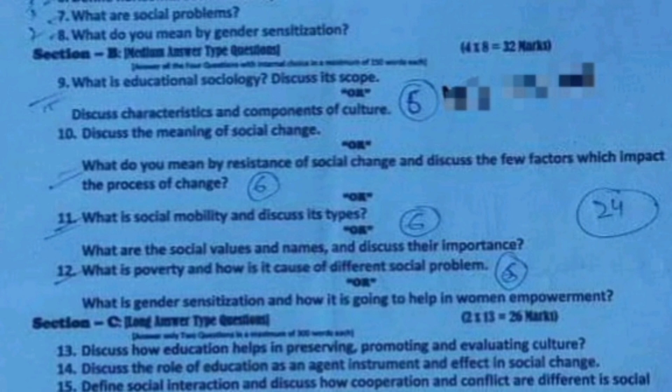Question number 10: discuss the meaning of social change, or what do you mean by resistance of social change and discuss the few factors which impact the process of change. Question number 11: what is Social Mobility? Discuss its types, or what are Social Values — name them and discuss their importance.